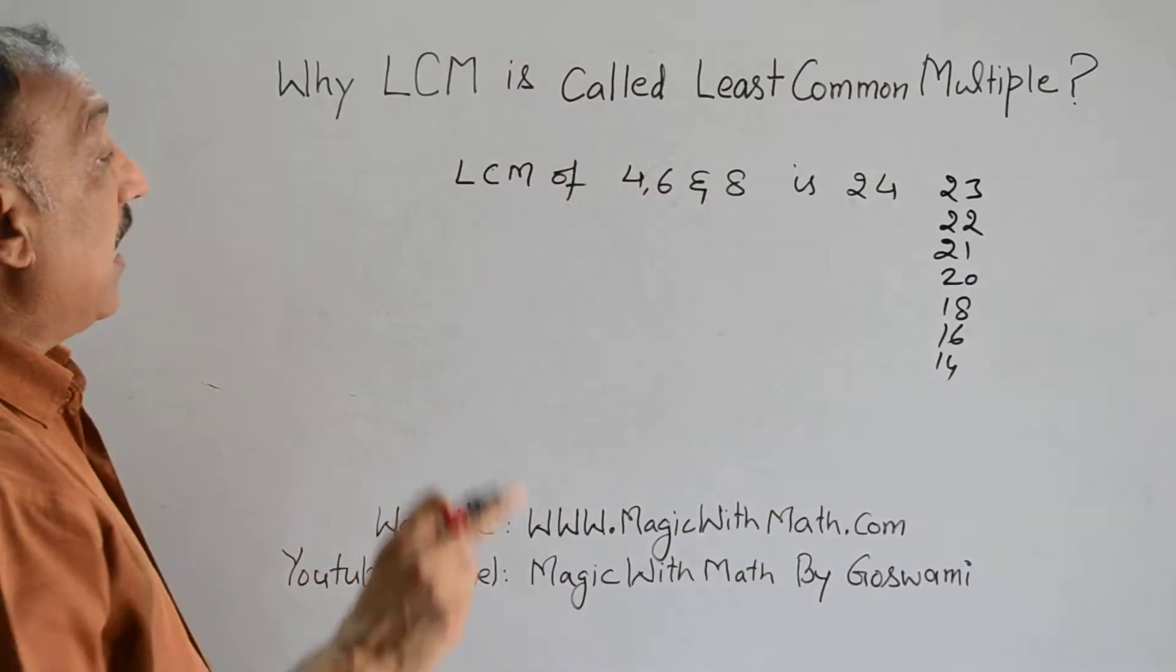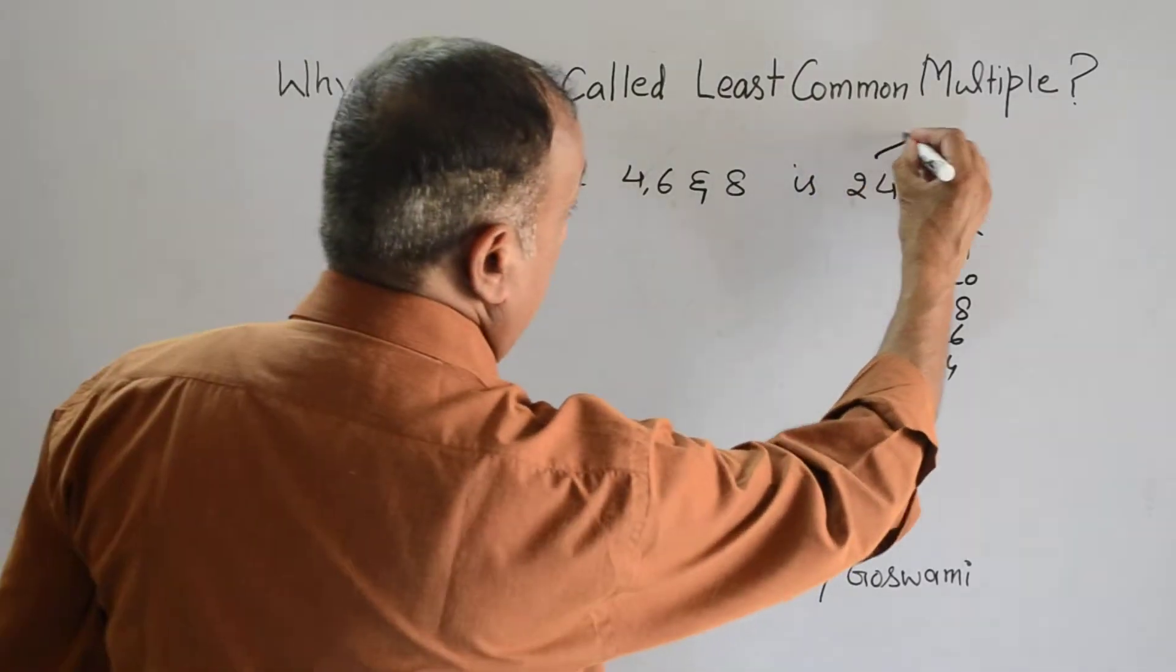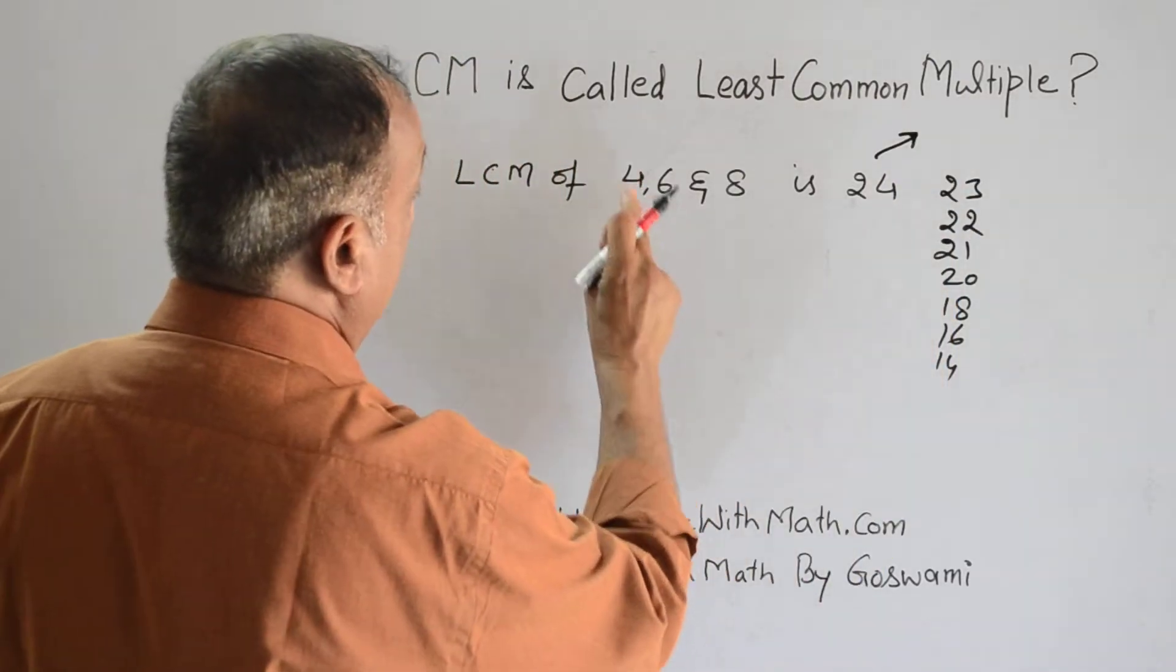Of course, there are so many numbers bigger than this number which can be divided by 4, 6, and 8.